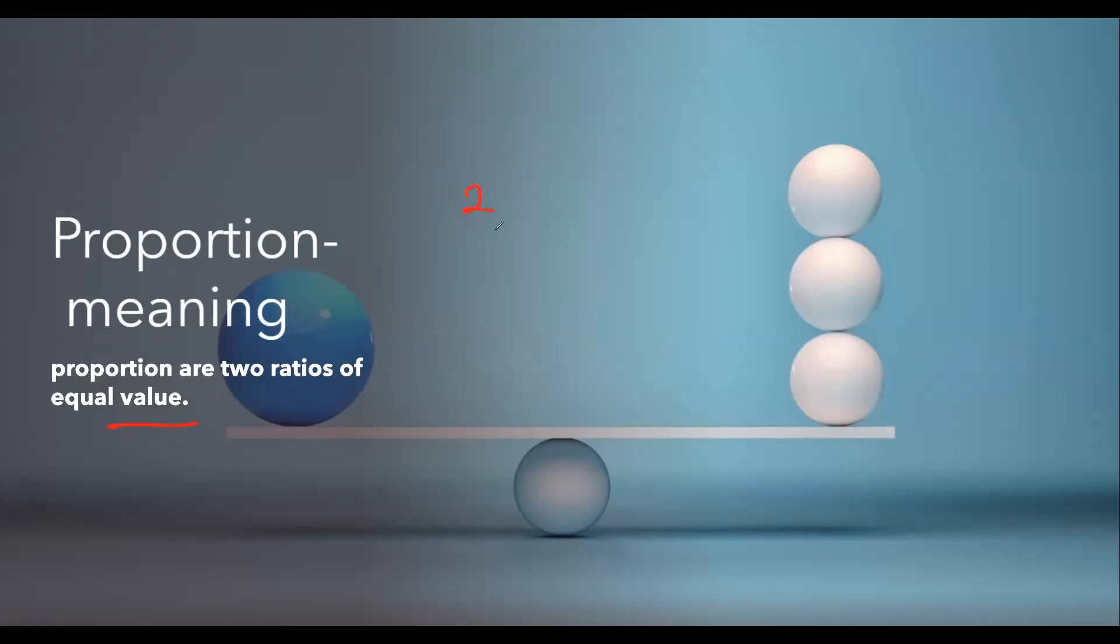So proportion simply means two ratios that are equal. For example, if I write down two by five and let's say four by ten. Now this is two by five reduced. But if I reduce four by ten, this can be reduced to two by five. So even though in appearance they both may be different, but they are actually the same ratios when you put them down into the simplest form.